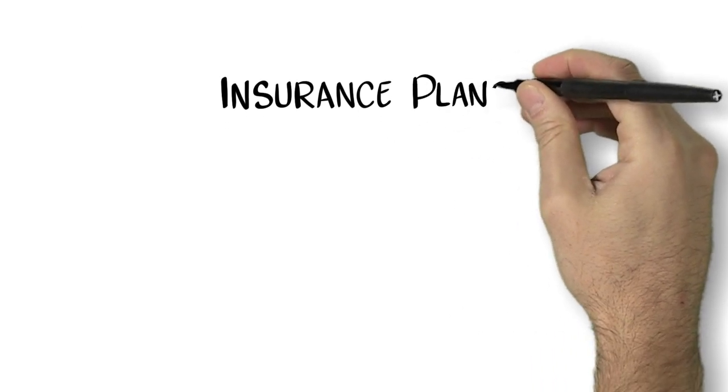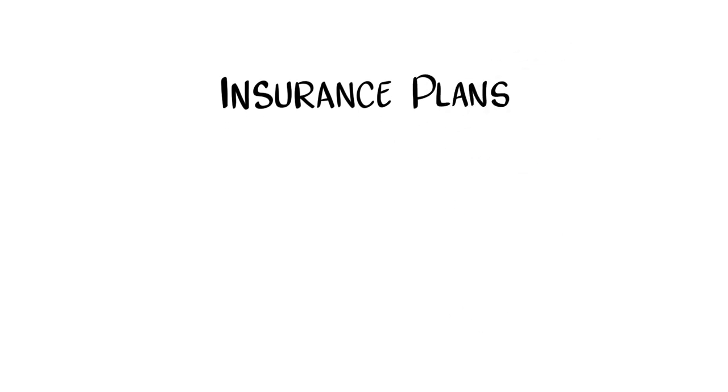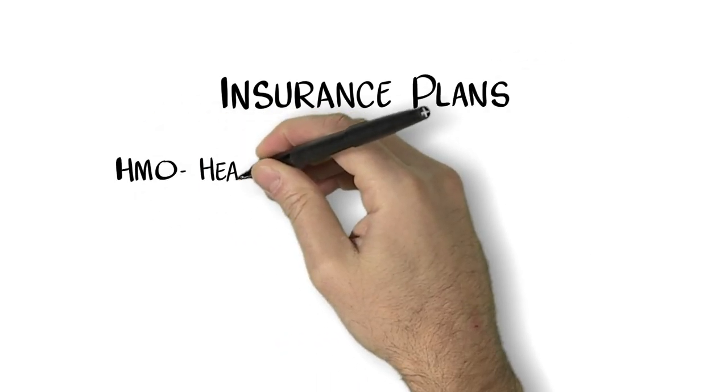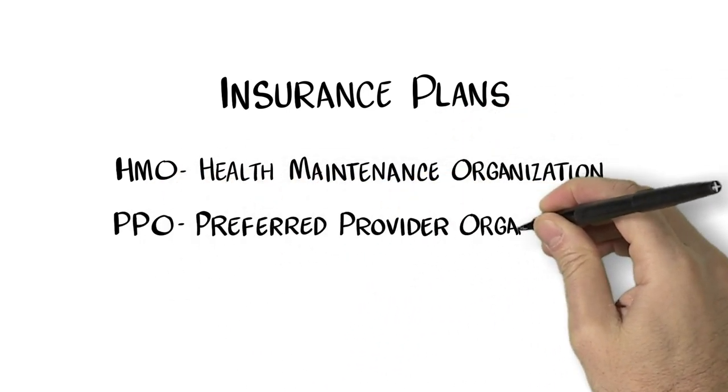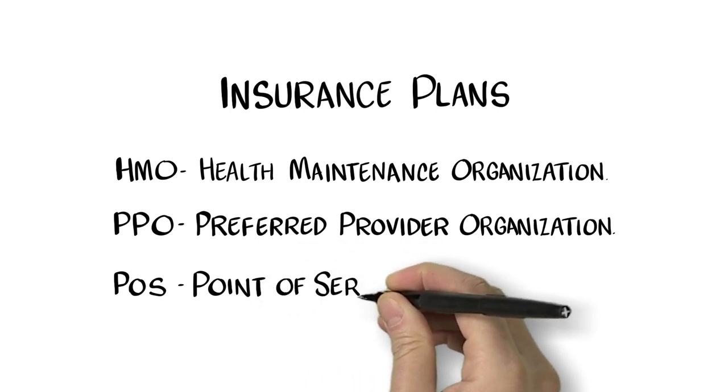When choosing an insurance plan, it is important to understand the three main types: Health Maintenance Organization or HMO, Preferred Provider Organization or PPO, and Point of Service or POS.